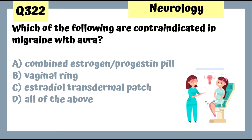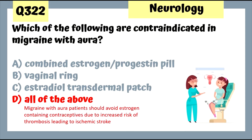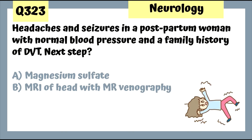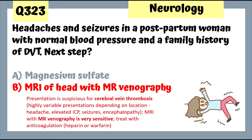Question 322: All of the following are contraindicated in migraine with aura because they could lead to ischemic stroke. Question 323: Headaches and seizures in a postpartum woman with normal blood pressure and a family history of DVT — get MRI of the head with MR venography; we're dealing with possible cerebral vein thrombosis, basically a DVT of the head. Treat with anticoagulation — heparin or warfarin.